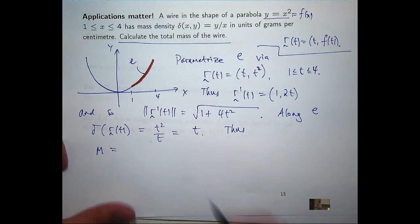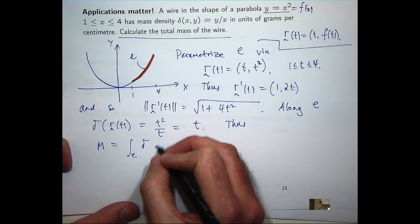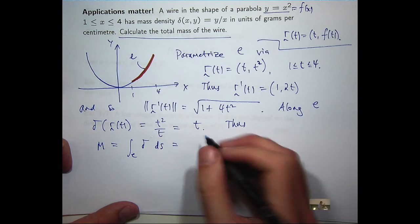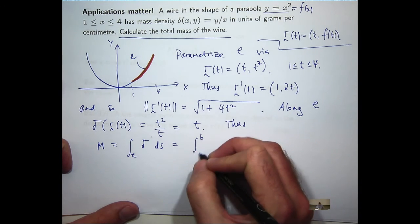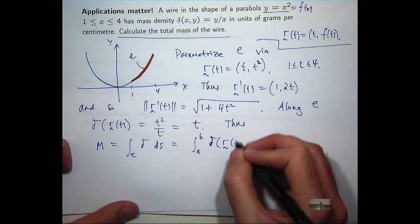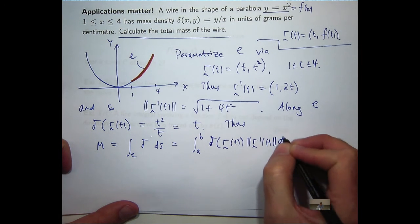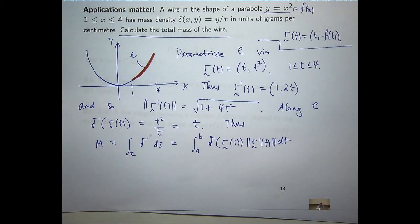And all I really need to do now is put those things together and integrate to calculate the total mass. So let's denote the total mass by M. This is the general expression that we're going to compute with. And all we need to do is just plug in. So here, a is going to be positive 1, b is going to be positive 4.